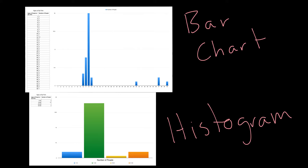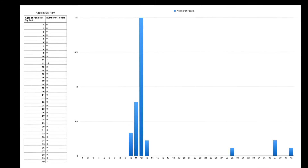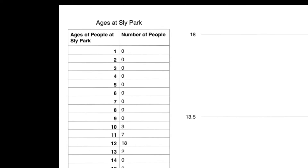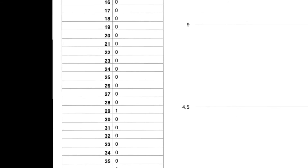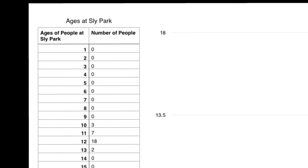So why would we want to use a histogram? If we zoom in on this bar chart right here, this is the ages at Sly Park, and we have a frequency table here. This is a make-believe example of if we had recorded the ages of people who went to Sly Park for our class — everyone in the class, me, and then the chaperones.